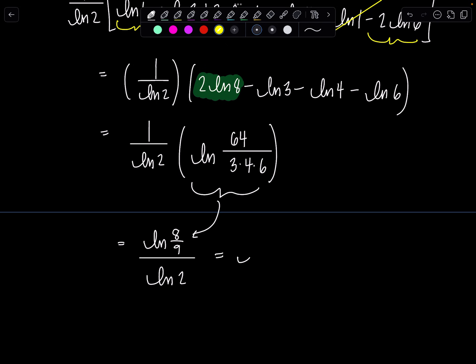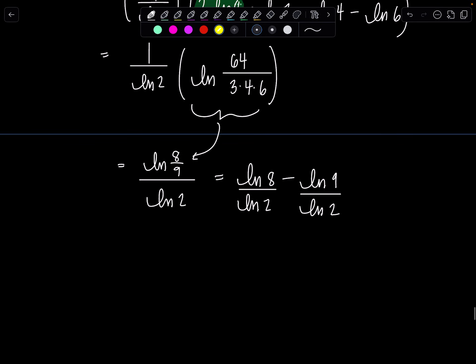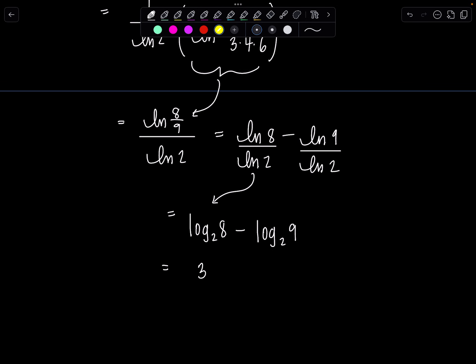Can we simplify further? Sure. I can write this as ln(8) - ln(9), each of them over ln(2). And then we could use change of base. I can write ln(8)/ln(2) as log base 2 of 8 minus this is log base 2 of 9. Log base 2 of 8 is 3. And then 9 is 3^2. So shall we write this as 2·log base 2 of 3? Yes. Why not?